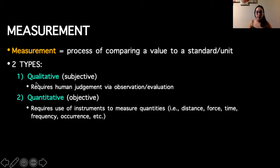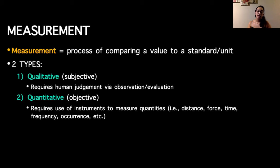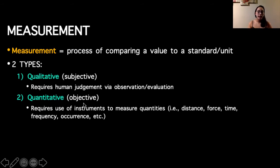We can collect many different types of measurements. Some can be qualitative — more subjective in nature, requiring human judgment via observation or evaluation. For example, in sports psychology, you might observe people and take notes on what you're observing. Quantitative research is more objective in nature, with naturally less bias. It usually requires instruments to measure quantities such as distance, force, time, frequency, or the number of occurrences of a particular outcome.